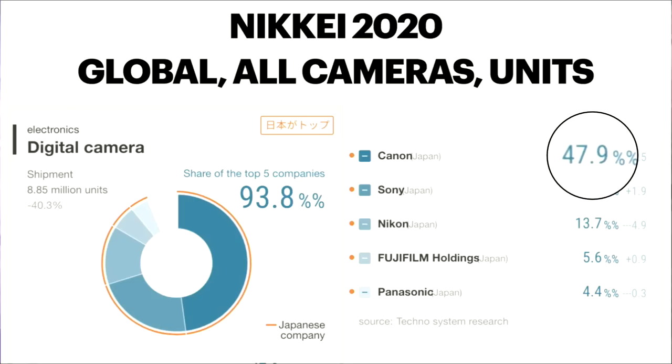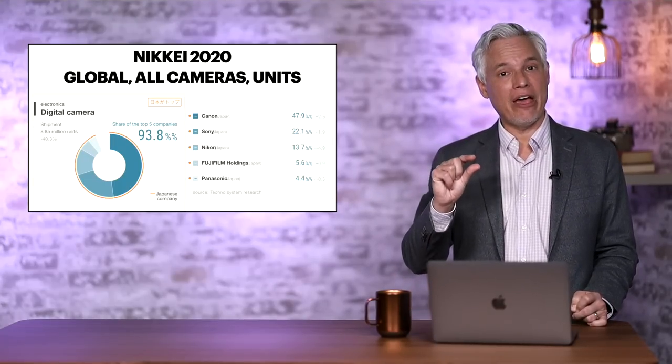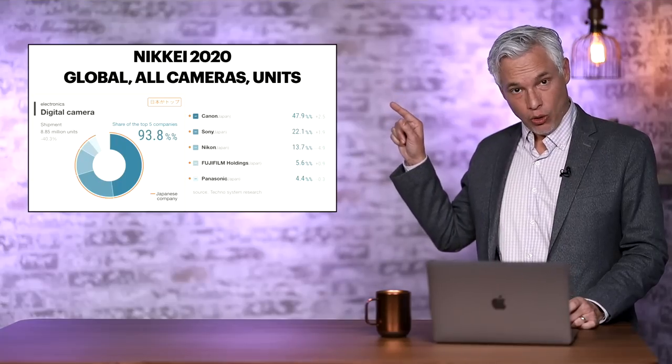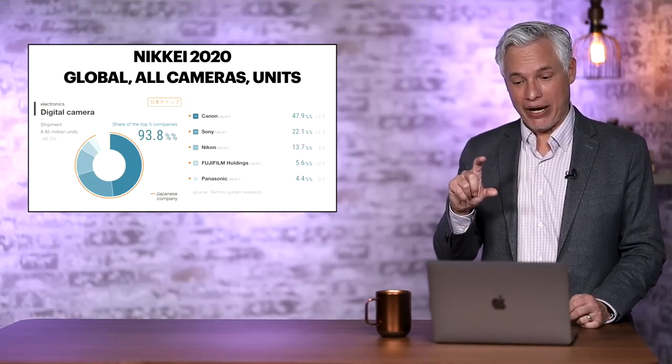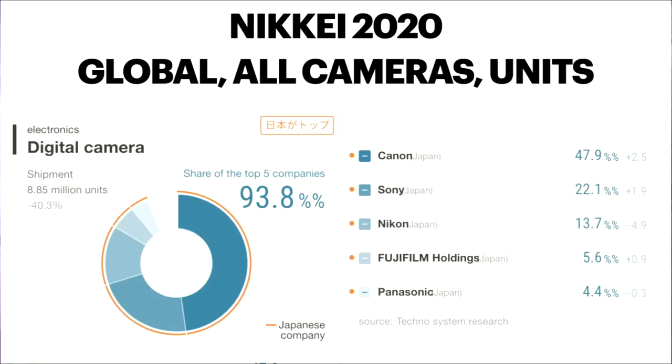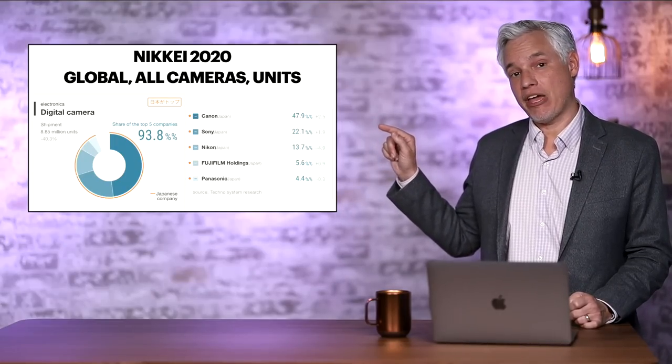So I went digging to find public sources of information that can give us some clue as to who is actually winning. And here we have Canon at 47.9%, Sony surpassing Nikon since 2018 at 22.1%, still less than half of the Canon digital camera sales, followed by Nikon in a distant third place at about one eighth of the market, followed even farther by Fujifilm at 5.6%, Panasonic at 4.4%. This is global, it's worldwide. It's also all cameras, including little point and shoot cameras.